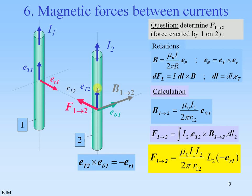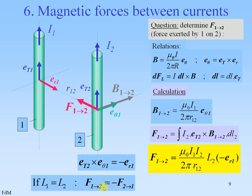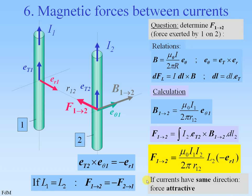Now, ET2 times e-theta-1, the factorial product, is minus eR1. So the Lorentz force from 1 on 2 is directed towards current 1, as expressed in this relation. And thus if L1 equals L2, then the force from 1 on 2 will be the same as the force from 2 on 1, except for the minus sign. And thus if the currents have the same direction, the force will be attractive.